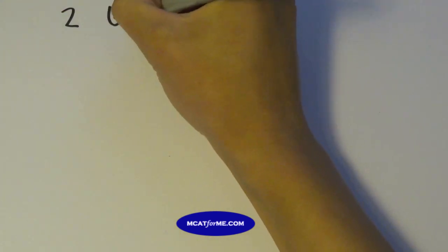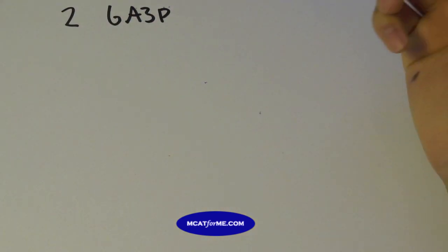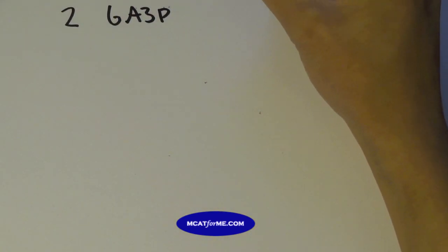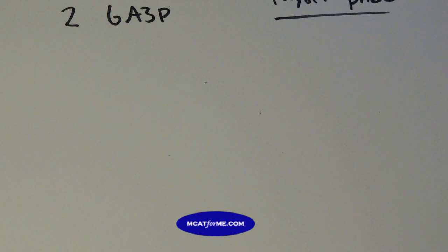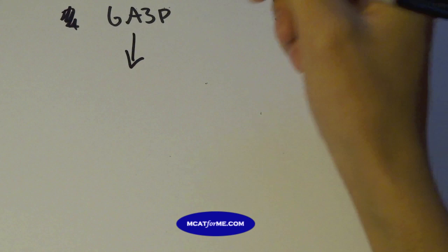So once we have those two GA3Ps, this is going to bring us into something called the payoff phase. And if you can guess, payoff is going to be something in energy, right? So let's just look at one GA3P at a time, and then we can figure out what goes on.